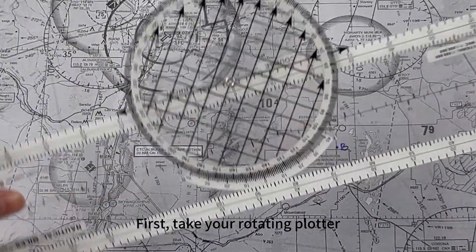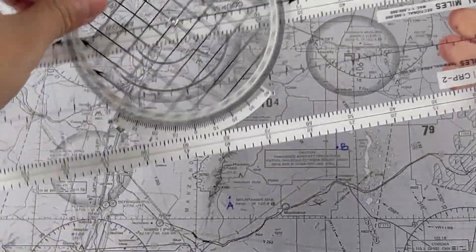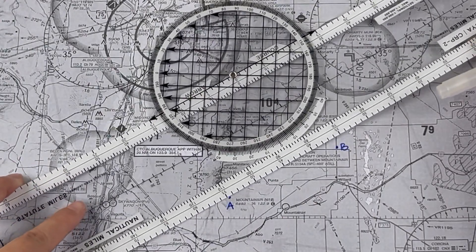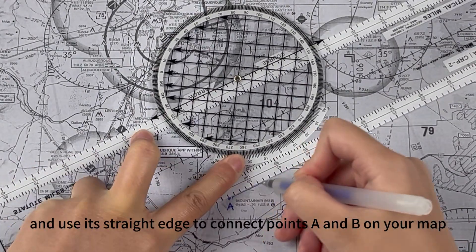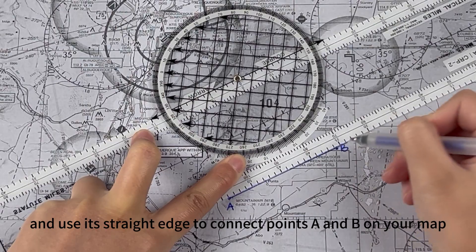First, take your rotating plotter and use its straight edge to connect points A and B on your map.